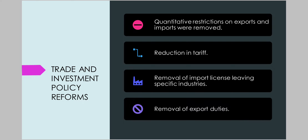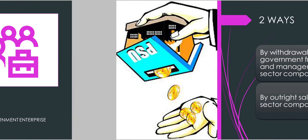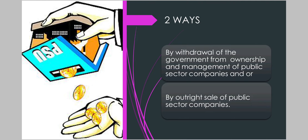All these steps were undertaken in order to encourage foreign trade for Indian economy. Coming to privatization. Privatization means shedding of ownership or management of government enterprises. This can be done in two ways: firstly, by disinvestment, that is withdrawal of the government from ownership and management of public sector companies.